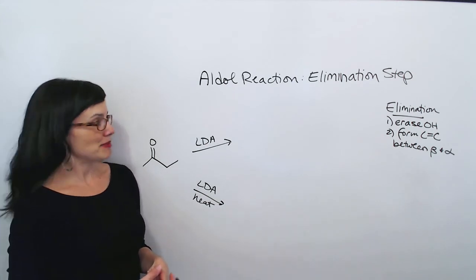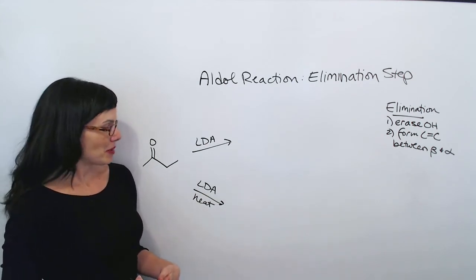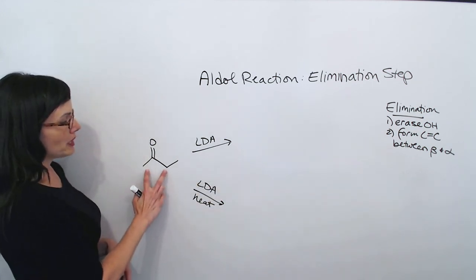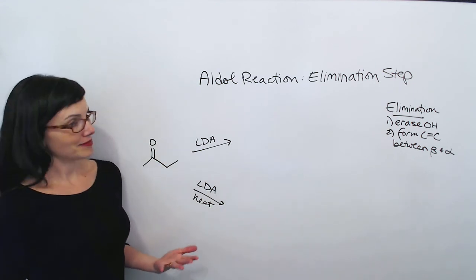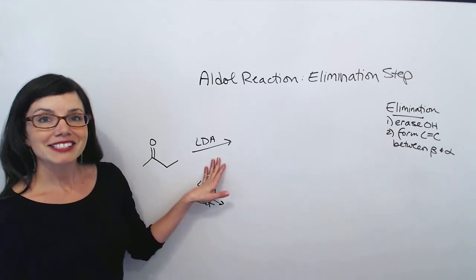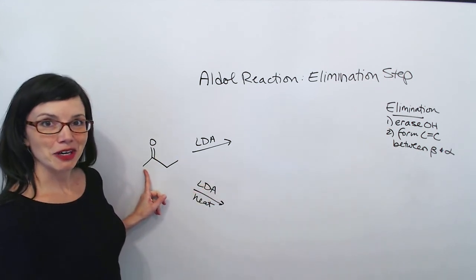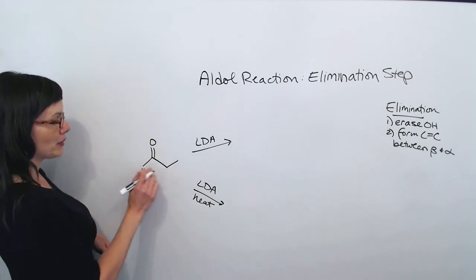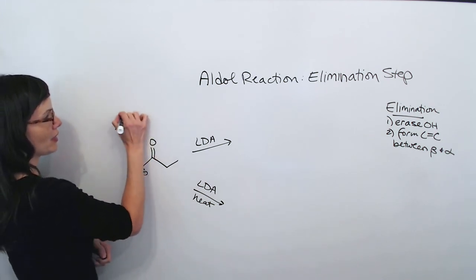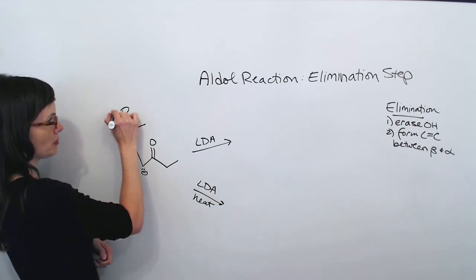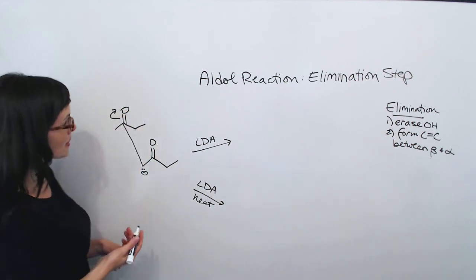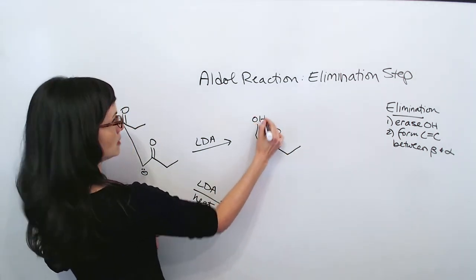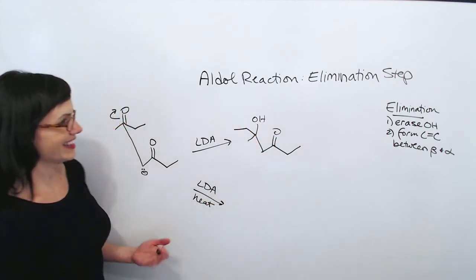Here we can compare the two types of products you might get from this ketone, depending on whether we do the reaction cold or warm. First we need to decide which alpha carbon is going to attack. And of course that depends on which base we use. LDA chooses the less-hindered alpha carbon. So I'm going to create an enolate. And then I'm going to let that carbon attack the carbonyl of another molecule. I'm just going to draw this bond and push the electrons up onto the O. And when I redraw my product now, this just looks lovely. There it is.